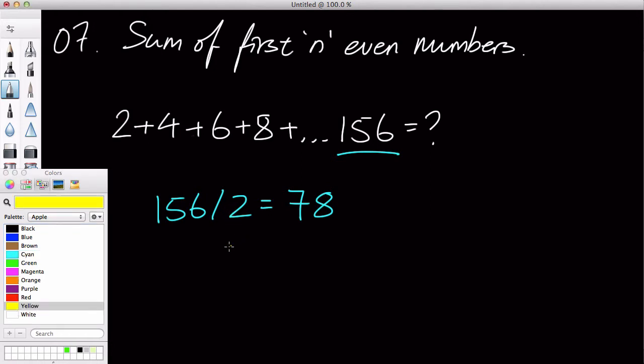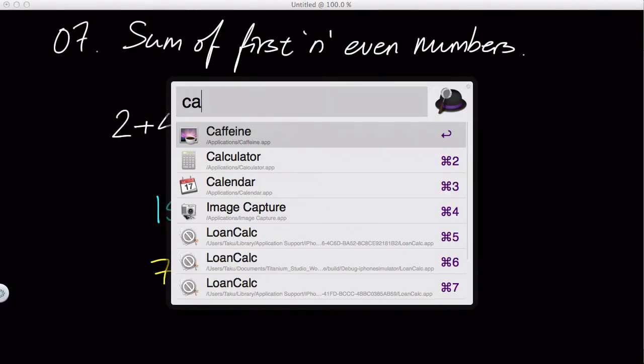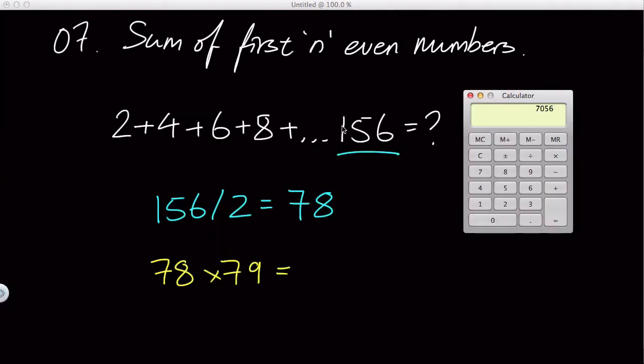Now, the next thing we're going to do is get that 78, add 1 to it, which is 79, and multiply that together. Okay, which gives me, I have no idea, so I am going to use a calculator. 78 times 79 is 6162.